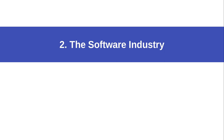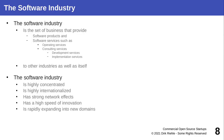Software products are created, provided, and operated by the software industry — sometimes called the IT industry, though that's often a bit more broadly viewed. The software industry, in my definition, is the set of businesses that provide software products and software services, where software services can be operating the software for you, consulting services, regular development of custom code, and implementation services. No industry today — whether logistics, automotive, fashion, beauty, or what have you — can do without software.